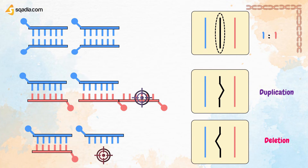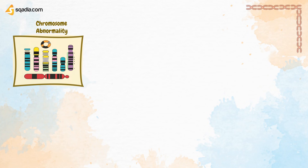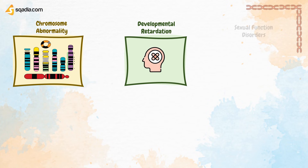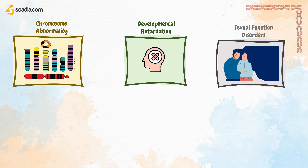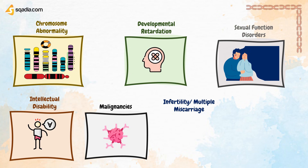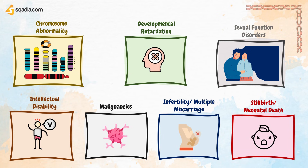We will talk about the indications for chromosome analysis. The situations in which cytogenetic investigation is advised are: suspected chromosome abnormality, multiple congenital anomalies and developmental retardation, disorders of sexual function, undiagnosed intellectual disability, certain malignancies, infertility or multiple miscarriage, and stillbirth and neonatal death.